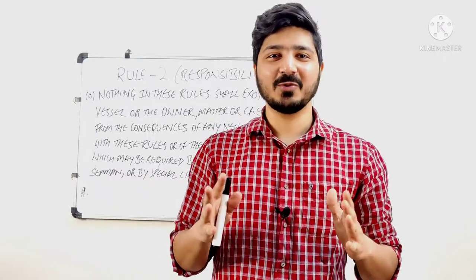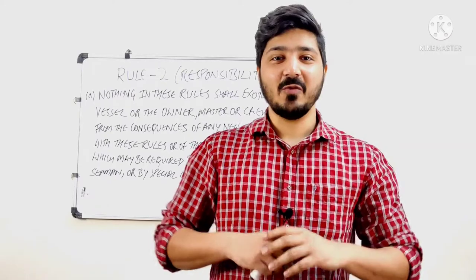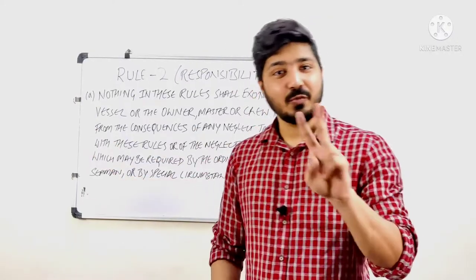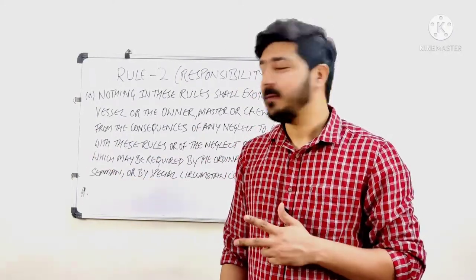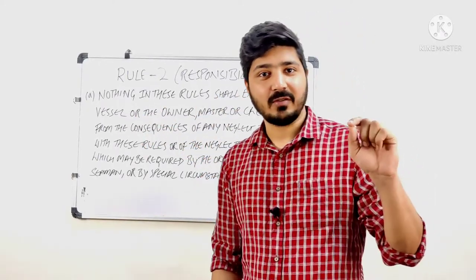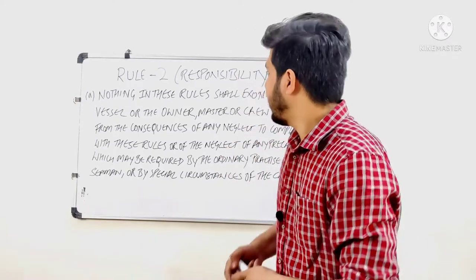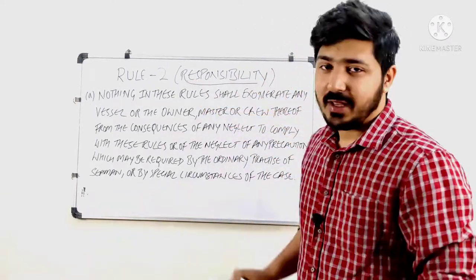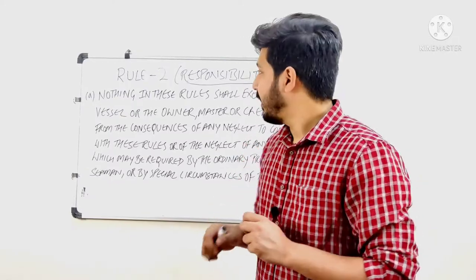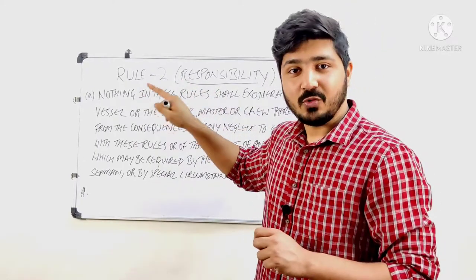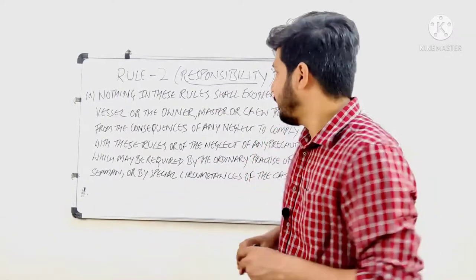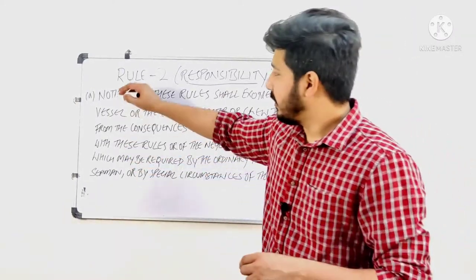Welcome to Sailor's Guide. Today we are jumping on to Rule Number Two. I have written here only Part A — we have two parts in Rule Number Two, Part A and Part B, as you have already known from your ROR books. Rule Number Two is about Responsibility: whose responsibility it is to comply with these rules and what happens if they don't.